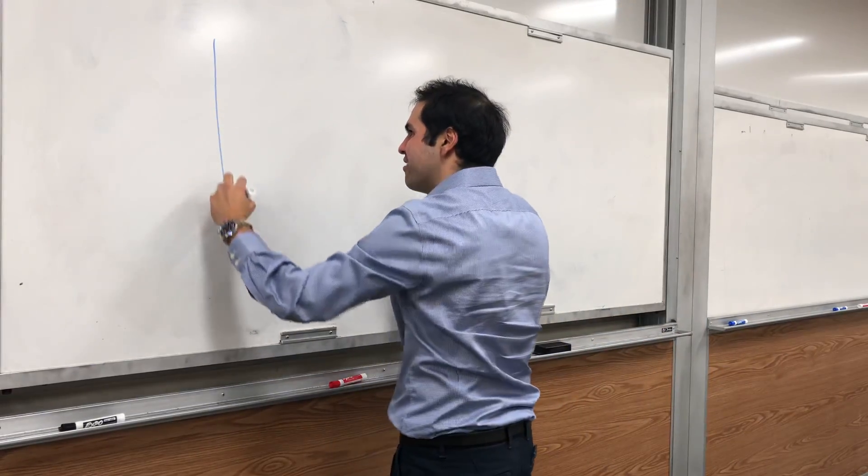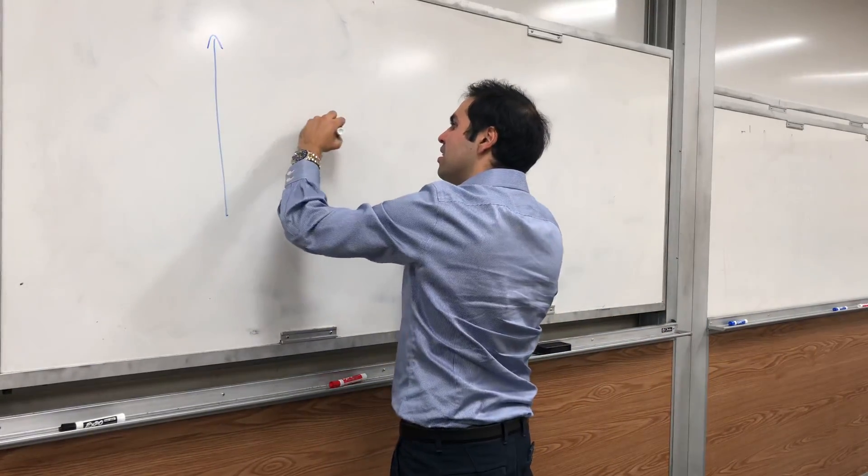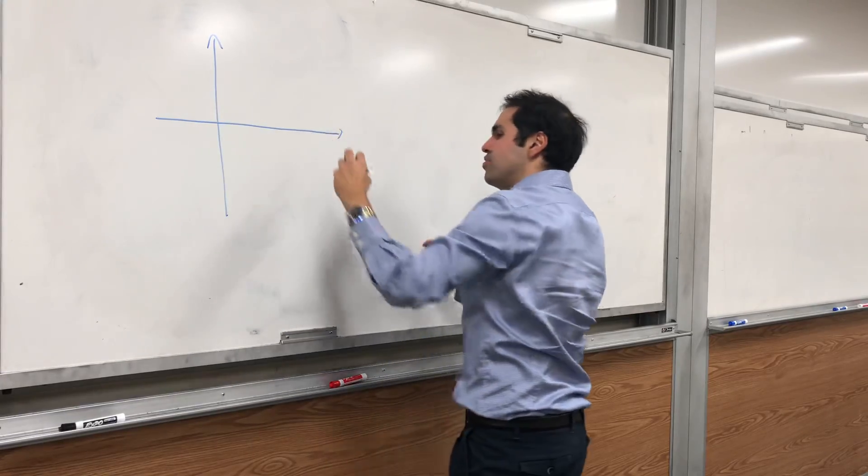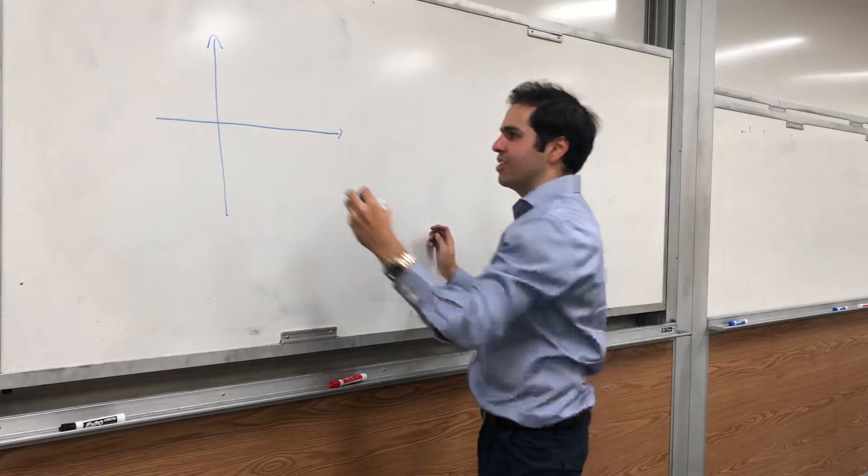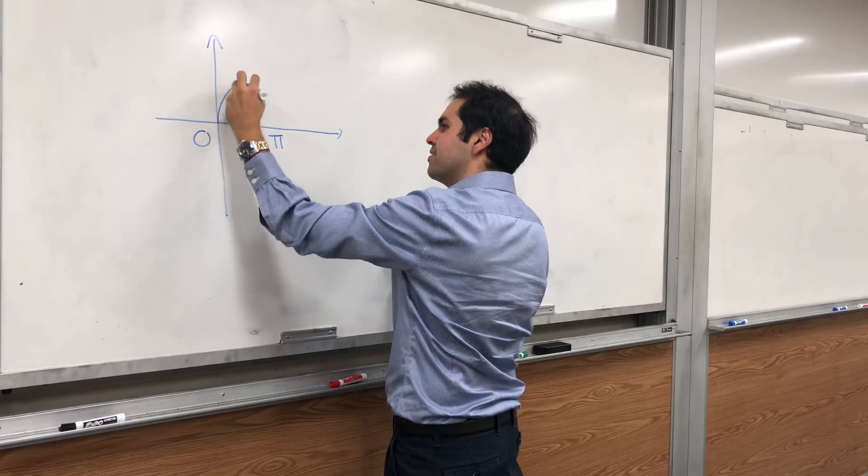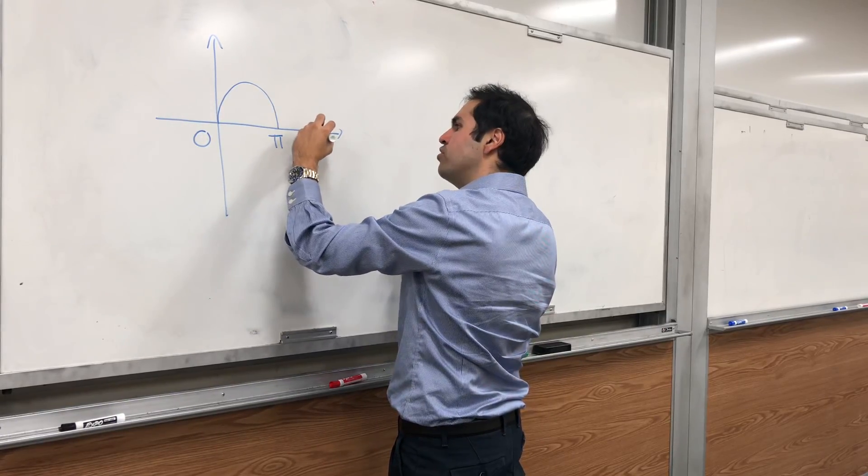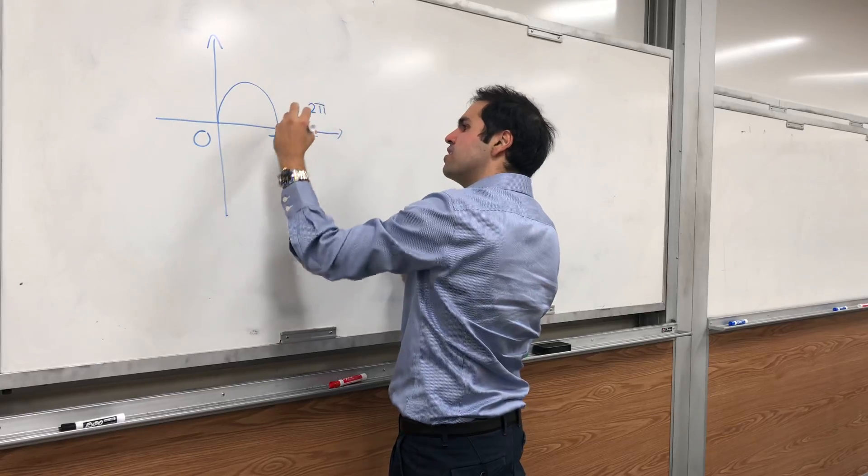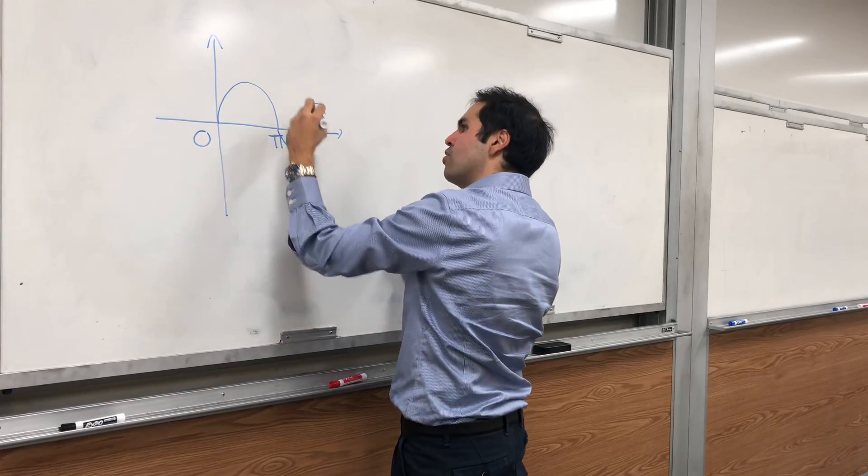Suppose you have the following scenario. Suppose you have the following strange function. On 0 to pi, it's sine of x. From pi to 2 pi, it's a bit smaller, sine of x over 2.